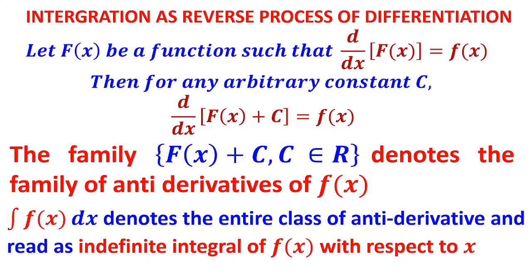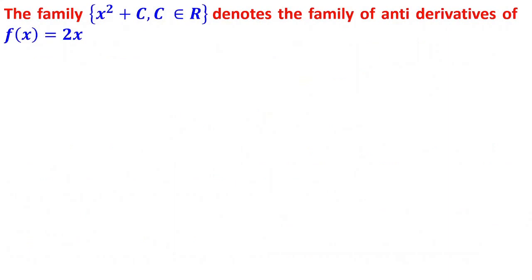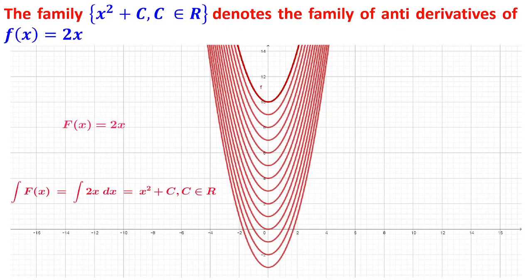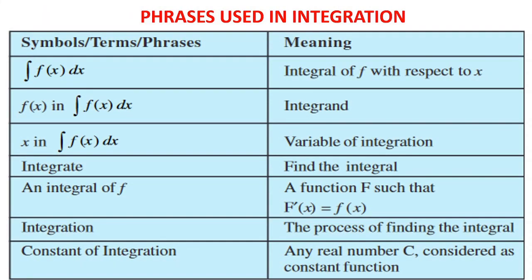The integral ∫f(x)dx denotes the entire class of anti-derivatives and is read as the indefinite integral of f(x) with respect to x. For example, if f(x) = 2x, integrating gives x² + c — a family of curves denoting the anti-derivative. Key terminology: f(x) is called the integrand, x is the variable of integration, and c is called the constant of integration, which is any real number considered as a constant function.